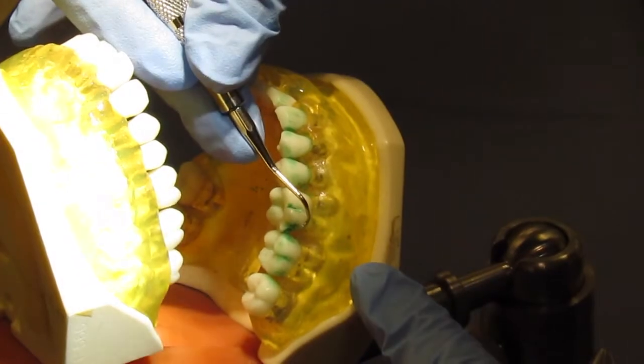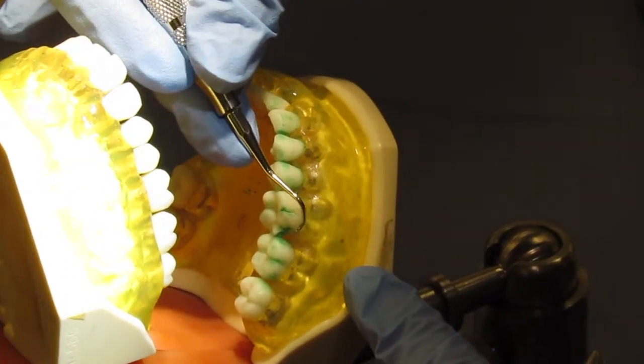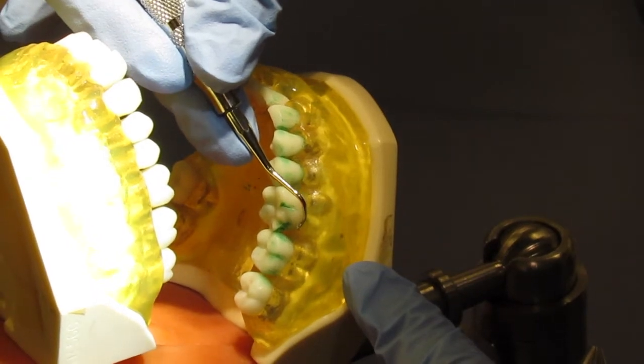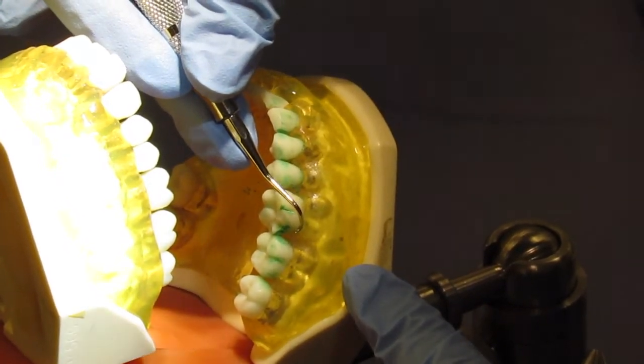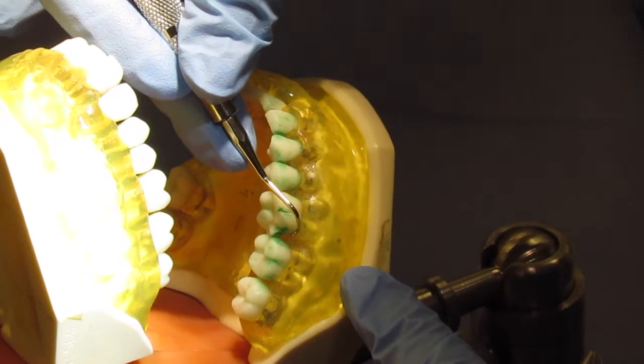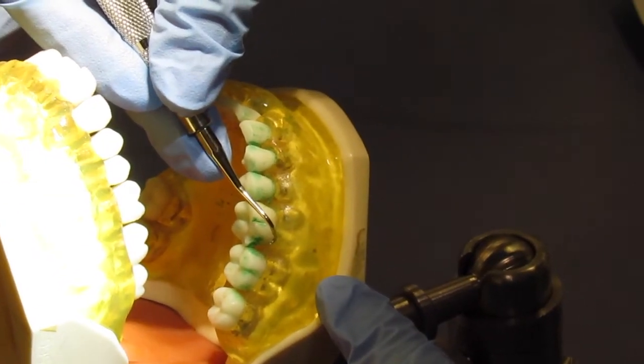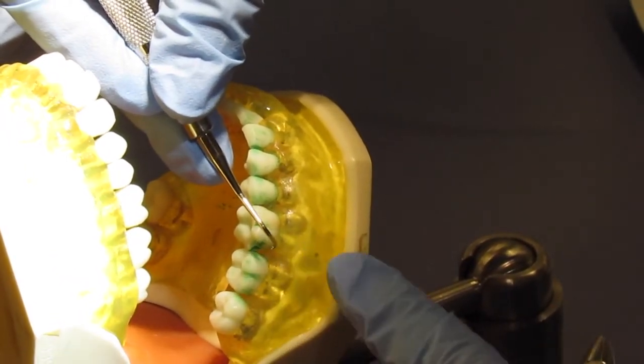Do the universal curette. We're going to start on the distal surface, so first point your toe back toward the distal and then apply the secondary blade to the distal line angle and make sure the terminal shank is in a fairly upright position.